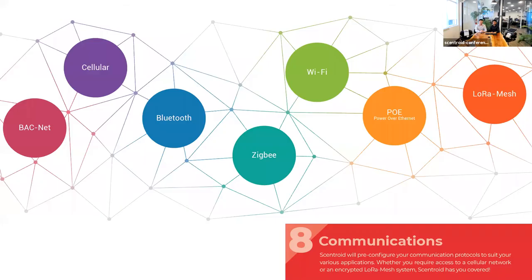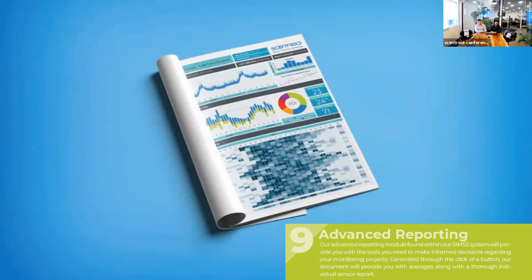We have many different communication options, and one of our strengths is that we're ready to find ways to integrate our system with your existing network so there are no upfront infrastructure costs. For example, if you want to combine your city area units with your AQSafe, we've thought of different communication protocols to integrate them. And a new feature available in SIMS 2 is the advanced reporting function — with just a press of a button, you can generate a weekly, monthly, or yearly report.